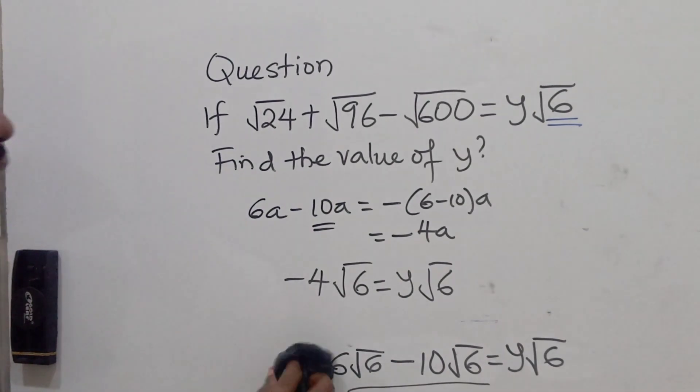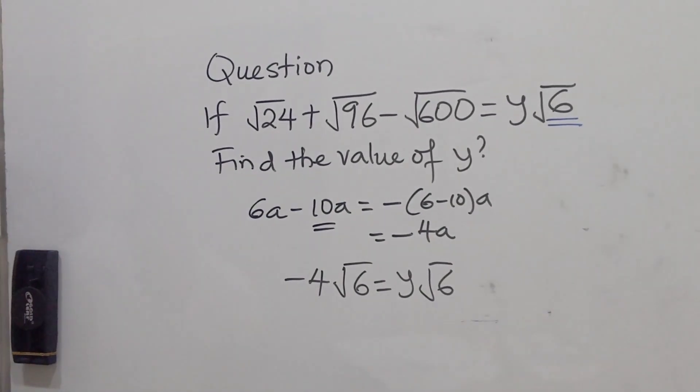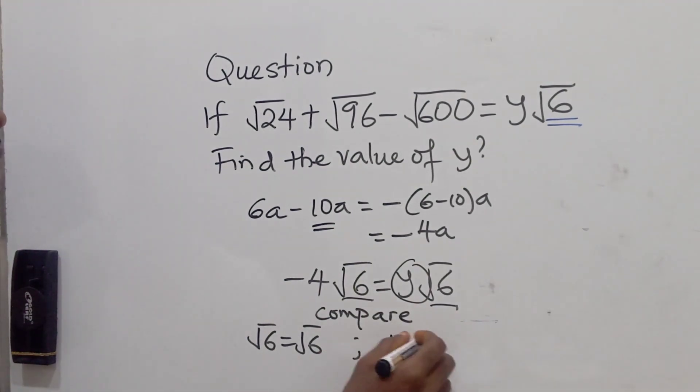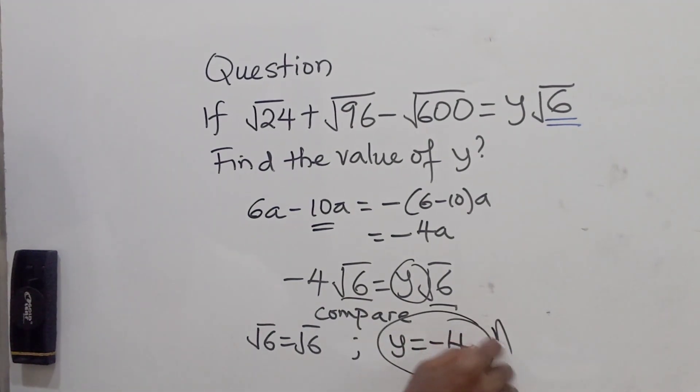So from this, what can we do? We can now compare. If you compare this, you see that root 6 is equal to root 6. This is equal to this. Now, what about y? We see that y is equal to minus 4. So that gives us the answer to this problem.